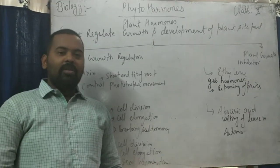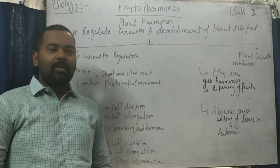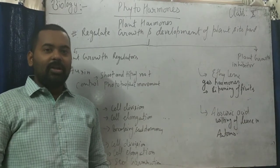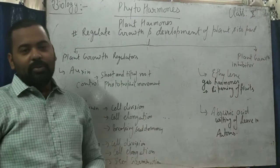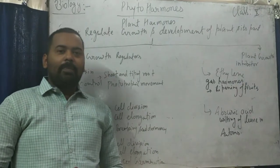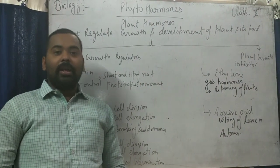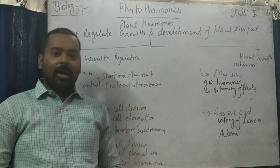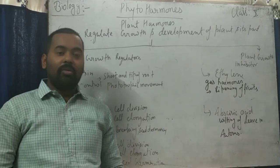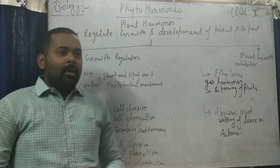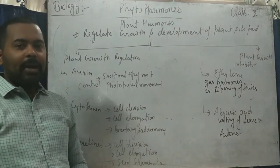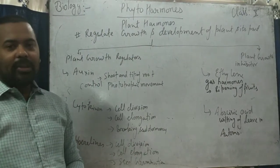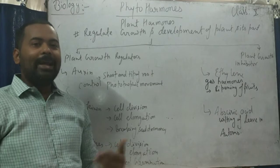Hello everyone. Today we will continue with our second chapter, Control and Coordination, in which we will learn about phytohormones. As you know, plants do not possess any kind of neuron cell or nervous system. Instead, they have some hormones which regulate their growth and development. The hormones present in plants are called phytohormones and they help to regulate the growth and development of the plant.